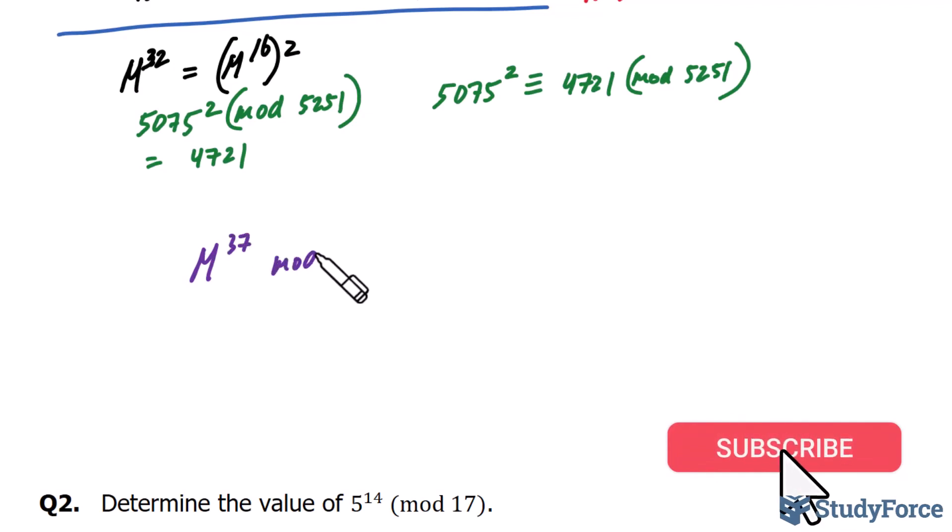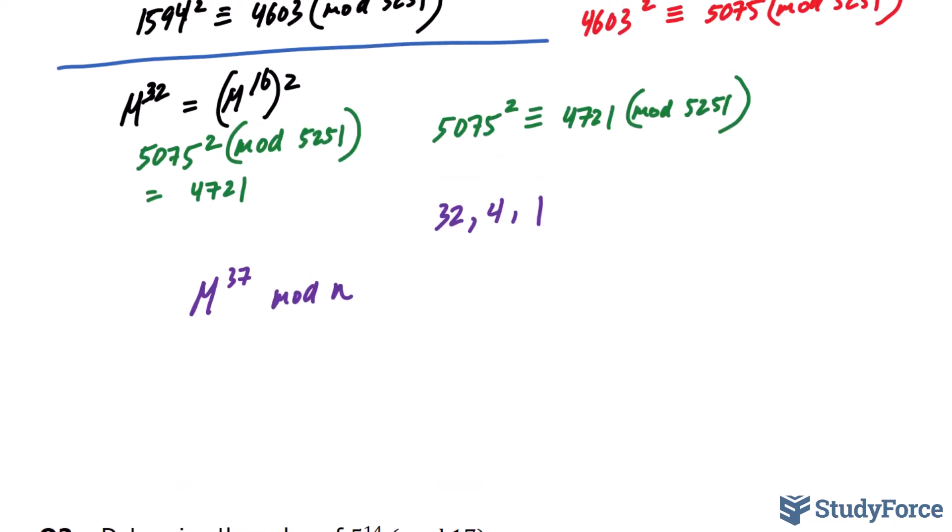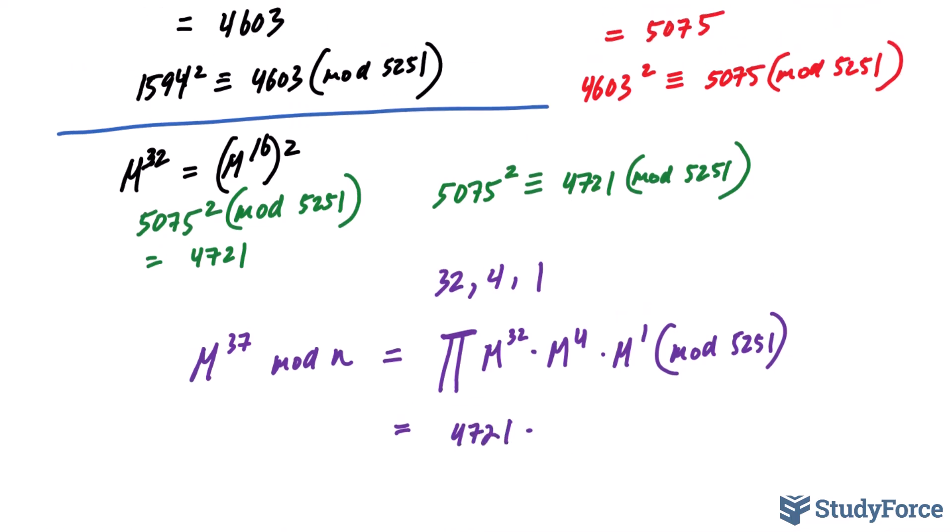To find m^37 mod n, which is our case, remember our m value we started off with was 3128, and the n value was 5251. And using our binary expansion where we had 32, 4, and 1, we'll be using those remainders and multiplying them together, which we denote with this uppercase pi, denoting the product of what we found for m^32 times m^4 times m^1 mod 5251. So what were those values that we found? For m^32, we found that the remainder was 4721 times the remainder for m^4 was 1771, and m^1 is simply the number that we started with, m. And remember that was 3128. All of those gets multiplied mod 5251.